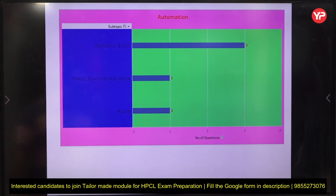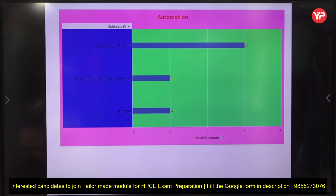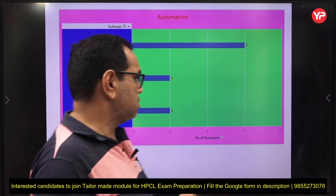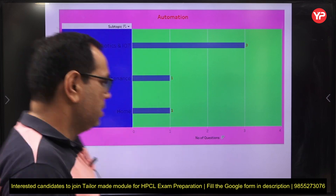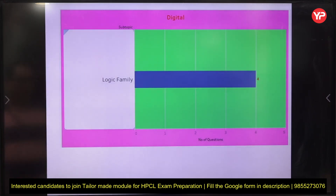Automation is now used in all industries so you should have knowledge of it. In automation, there were three questions from robotics and IoT, one question from predictive maintenance, and one from home automation — giving five questions total. Read about automation and different automation techniques for this upcoming exam.